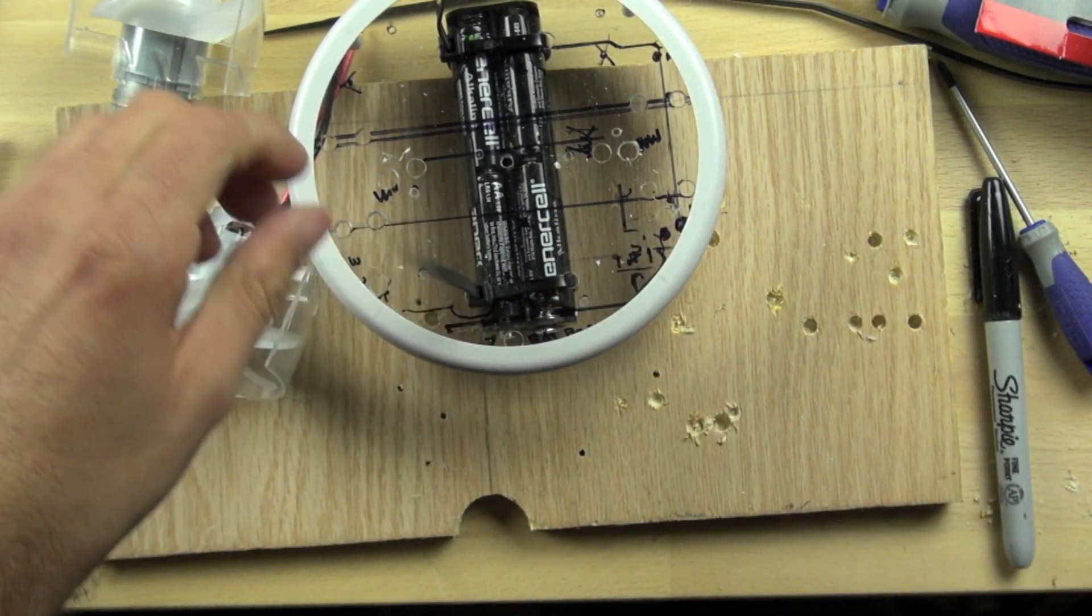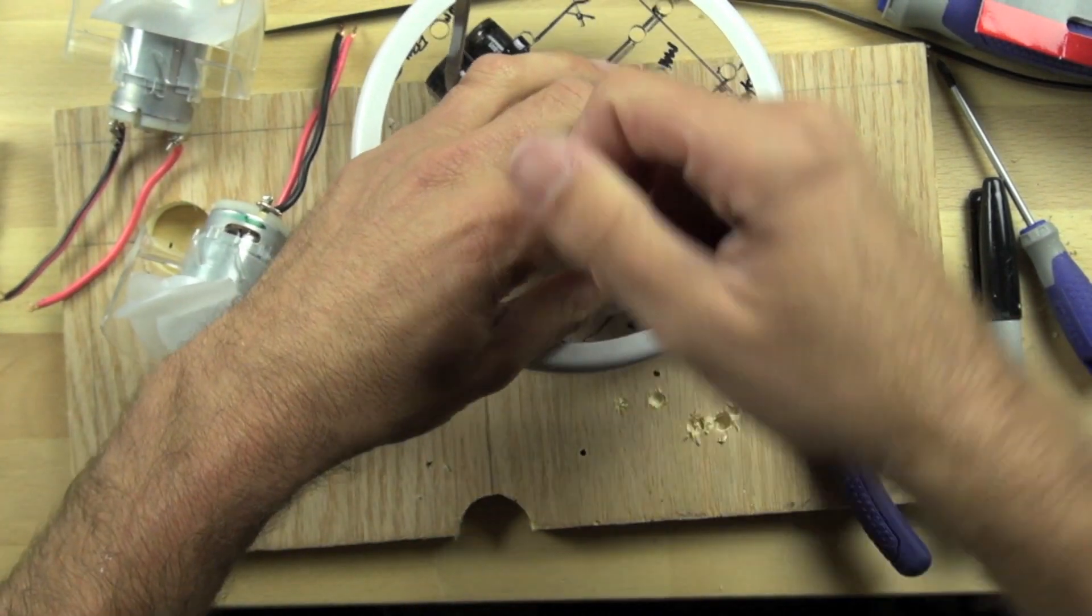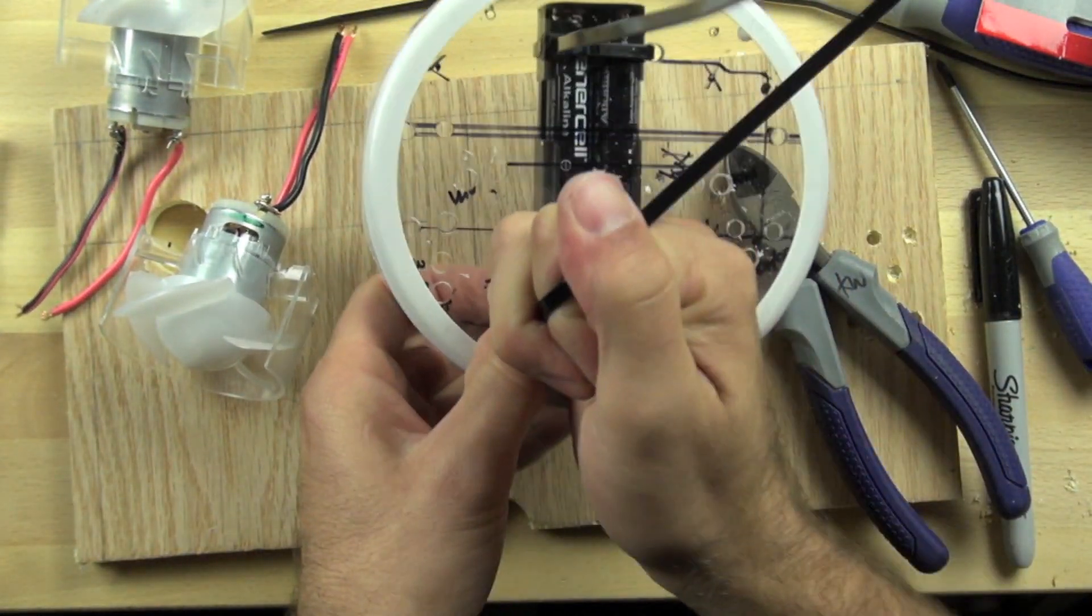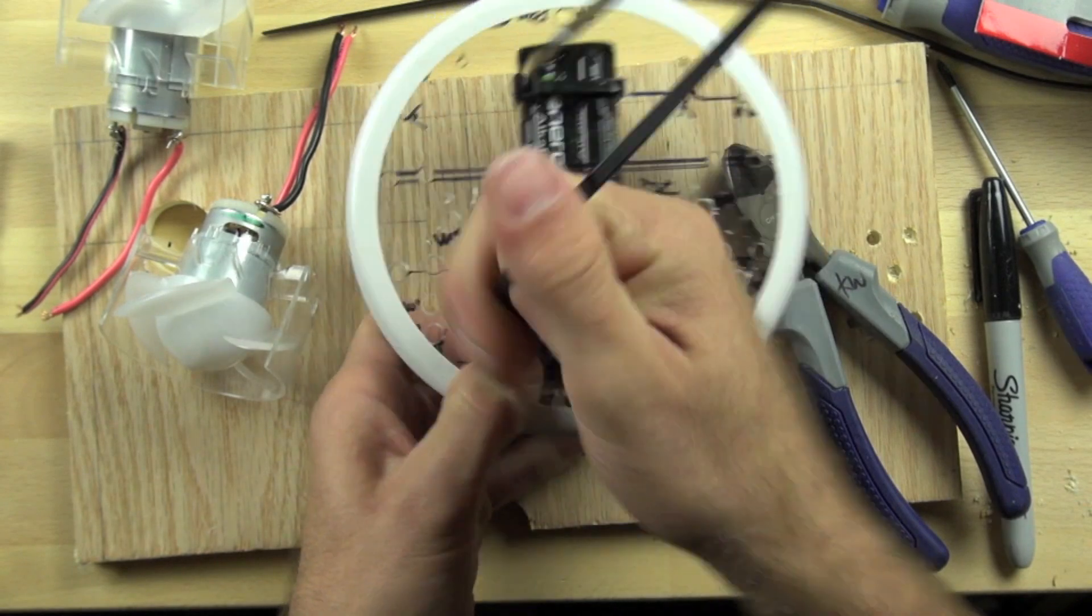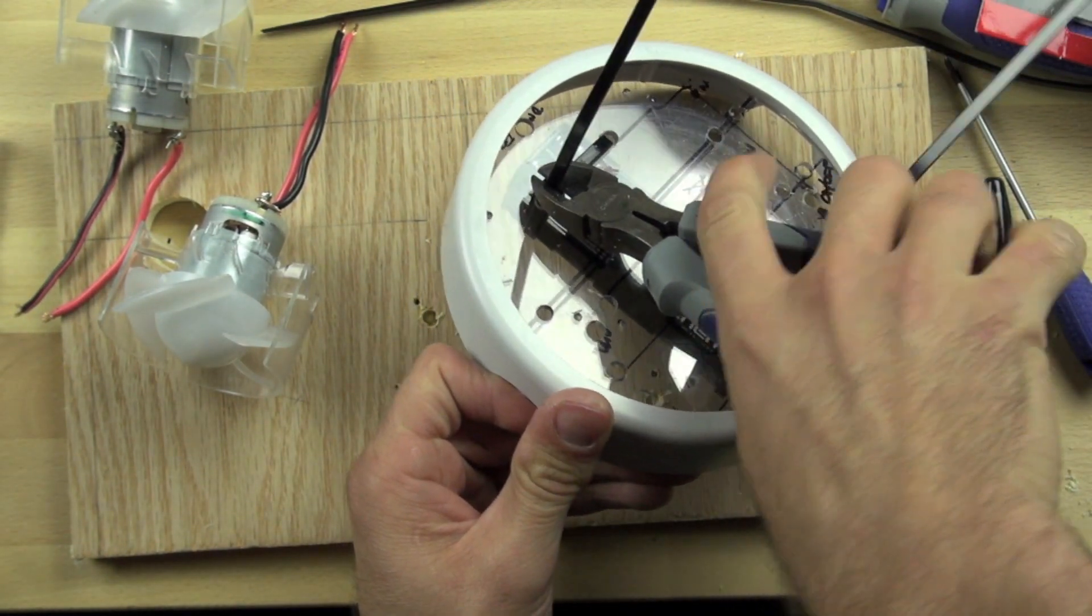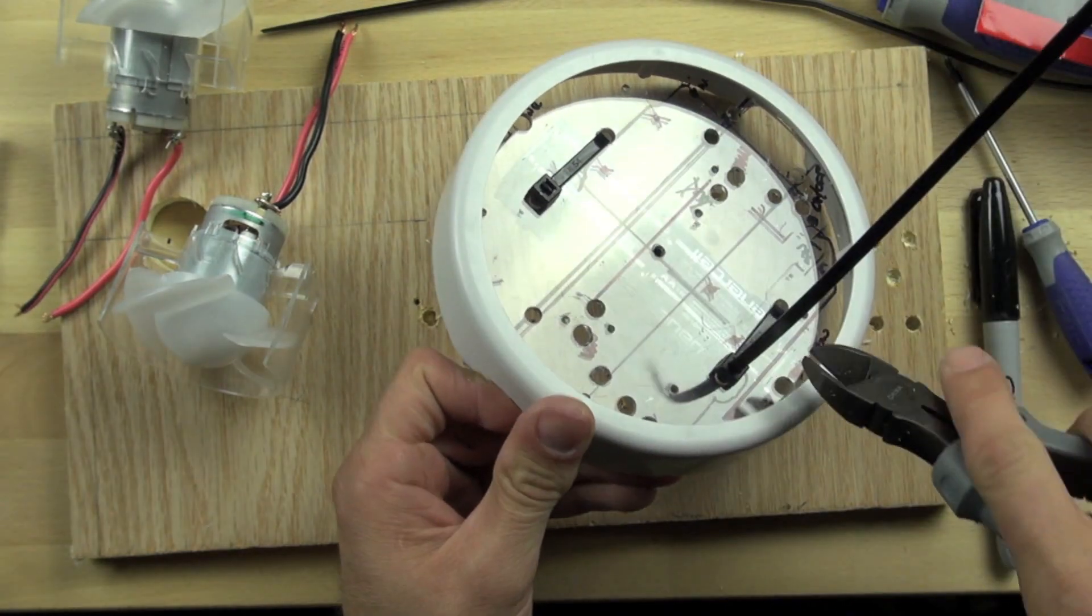Once you've got that pulled to a pretty tight level, you want to make sure it's really tight because that plastic will loosen over time. Then just cut it off like that.